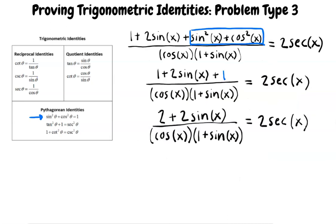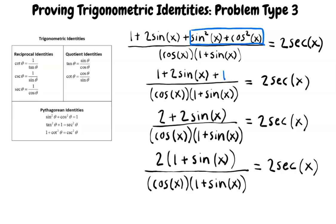The fraction then simplifies to 2 plus 2 sine of x over cosine of x times 1 plus sine of x. If we factor out a 2 from the numerator, we can cancel the term 1 plus sine of x from both the numerator and the denominator.